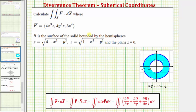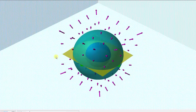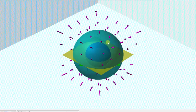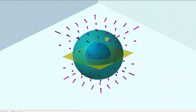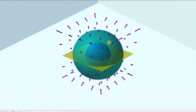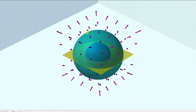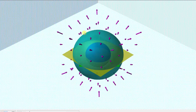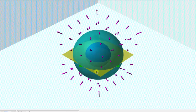Let's first take a look at this graphically. The surface S is the surface that bounds the solid between these two hemispheres above the xy-plane, graphed here in yellow. I've also graphed the vector field F in purple. So the value of the flux integral is equal to the net flow or total flow across the surface that bounds the solid between these two hemispheres and above the xy-plane.